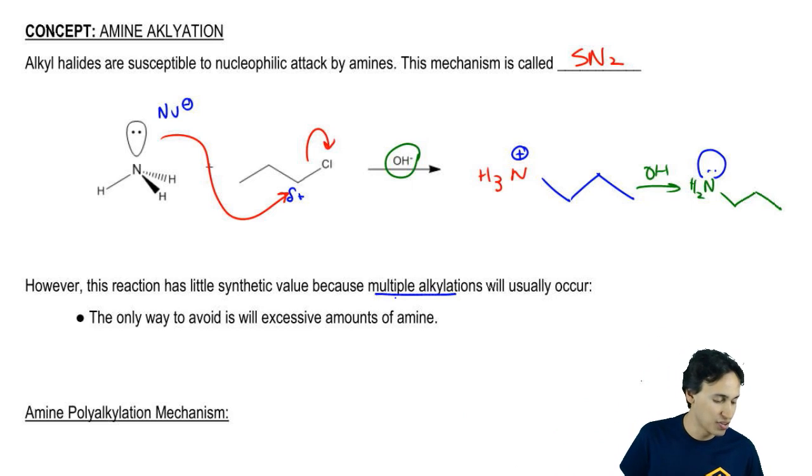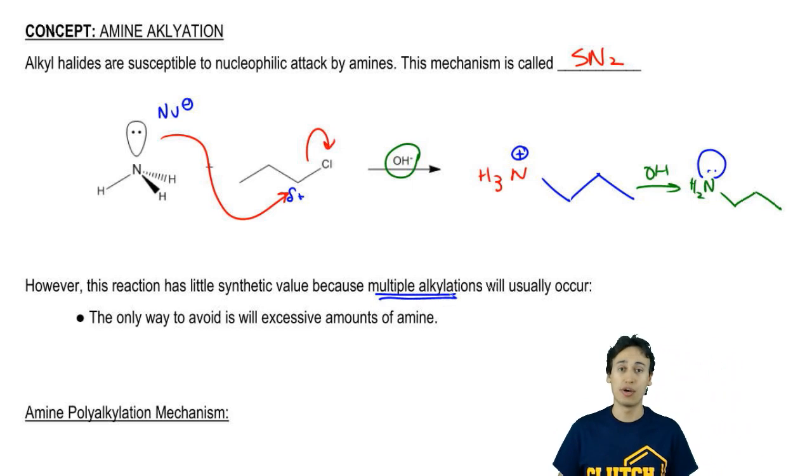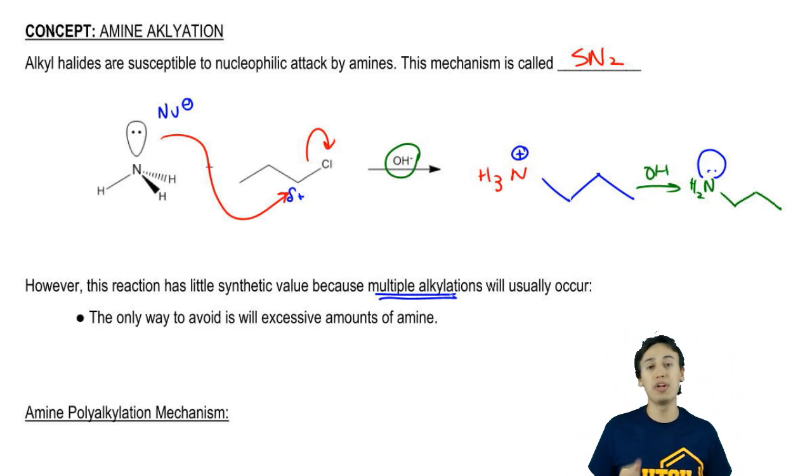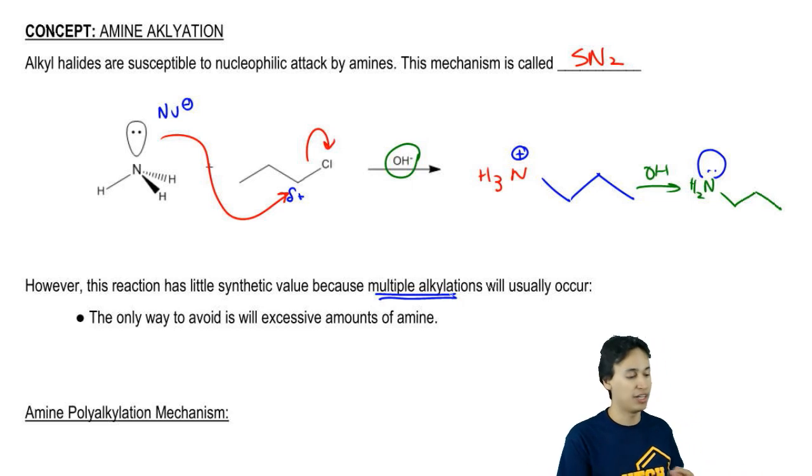So what we get is a possibility of multiple alkylations and what we're going to find is that the predominant product in these reactions is going to be a polyalkylated amine which kind of sucks if you're trying to make a primary amine.